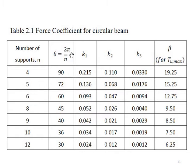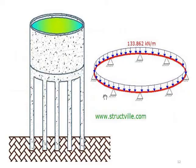The coefficient formula uses 2π times n, where n is equal to the number of supports. 2π times n gives us the beta value. We can use this formula for the water tank.